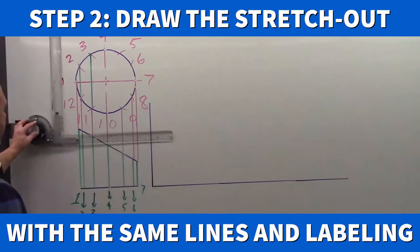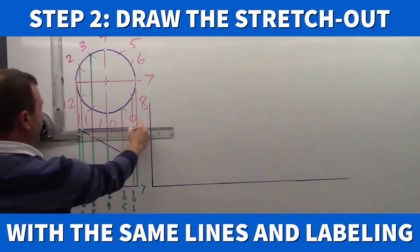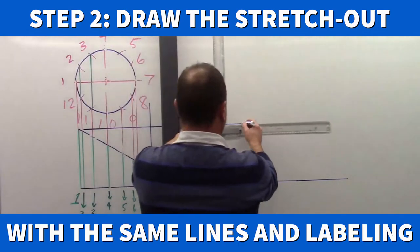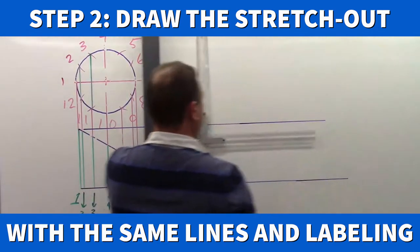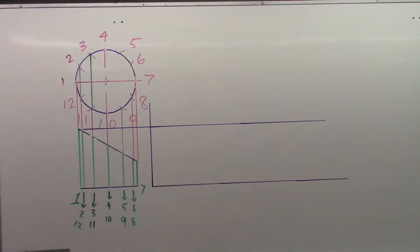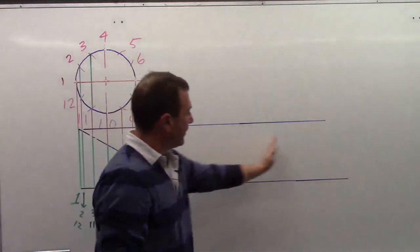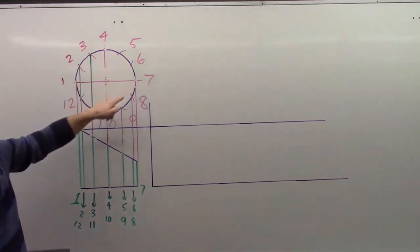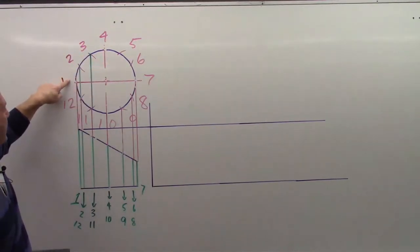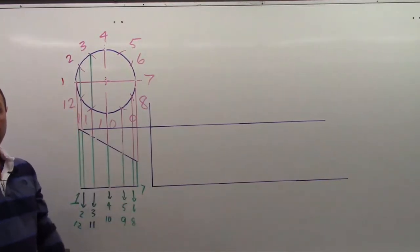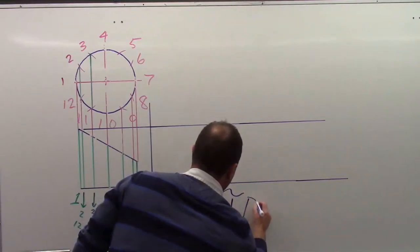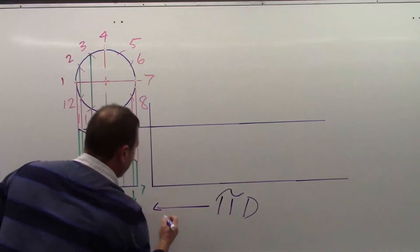For the vertical, I don't need to measure it. I can merely project this point straight across to establish my height. For the stretch out or the distance horizontally for our part, it comes to the shape we see here. The distance it takes to go around the part - how much does it take to go from one all the way around and back to one? That's what we refer to as perimeter, or in this case a circle, it's called circumference. And our calculation for circumference is pi times diameter. That will be our stretch out.